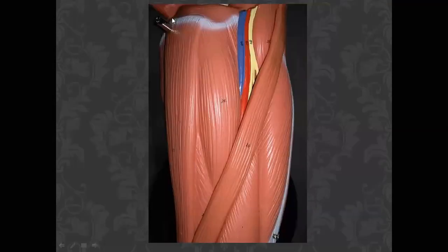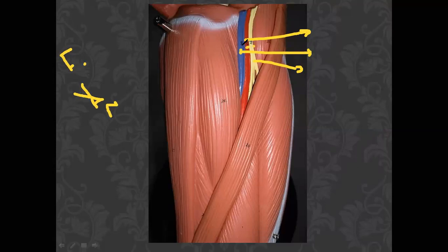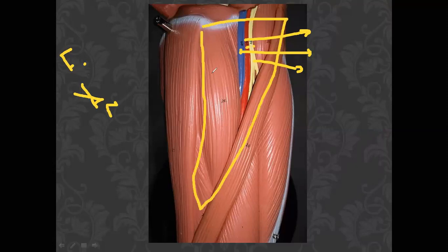In the femoral triangle, from medial to lateral, we have the femoral vein, femoral artery, and femoral nerve — vein, artery, nerve. The most medial is the femoral vein, the lateral one is the nerve, and the artery is in between. The femoral triangle is on the front of the upper medial side of the thigh, bounded by the sartorius and adductor longus.